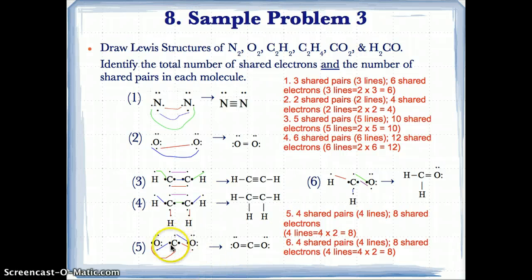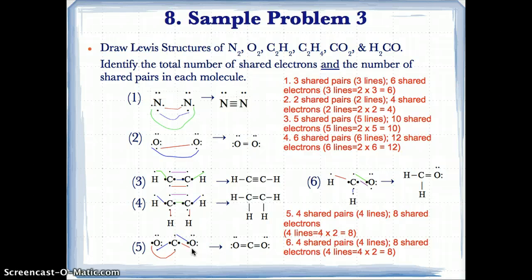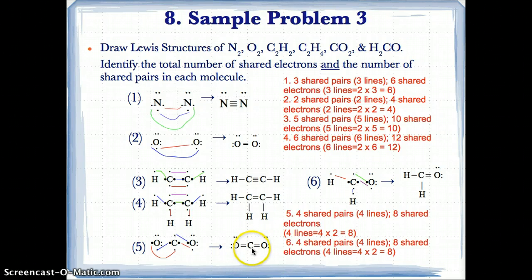For CO2, we bond the single electrons at south and west on C with west and south on the O on the left, and the single electrons at north and east on C with west and south on the O on the right. This results in double bonds between the C and the left O, as well as double bonds between the C and the right O — double bonds on both sides.